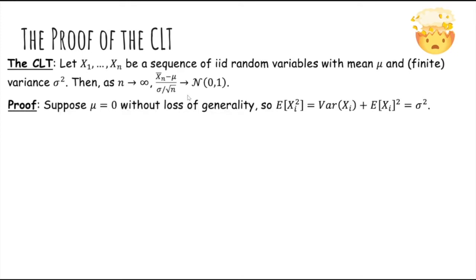So for the proof, let's start by assuming that the mean is zero. We can do this because if the mean is not zero, you can always just shift the distribution left or right by some number to get the mean to be zero without changing the distribution.